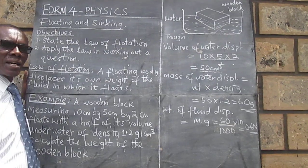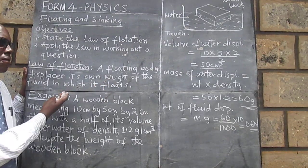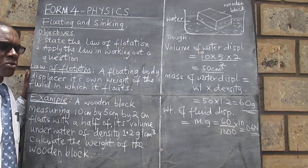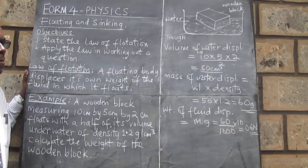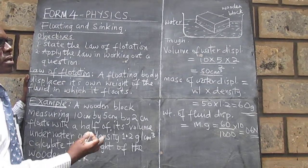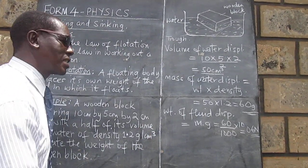And going back again to the law, a floating body displaces its own weight of the fluid in which it floats. So the weight of the fluid displaced is 0.6 Newton. And therefore we know now the weight of the block is also 0.6 Newton.